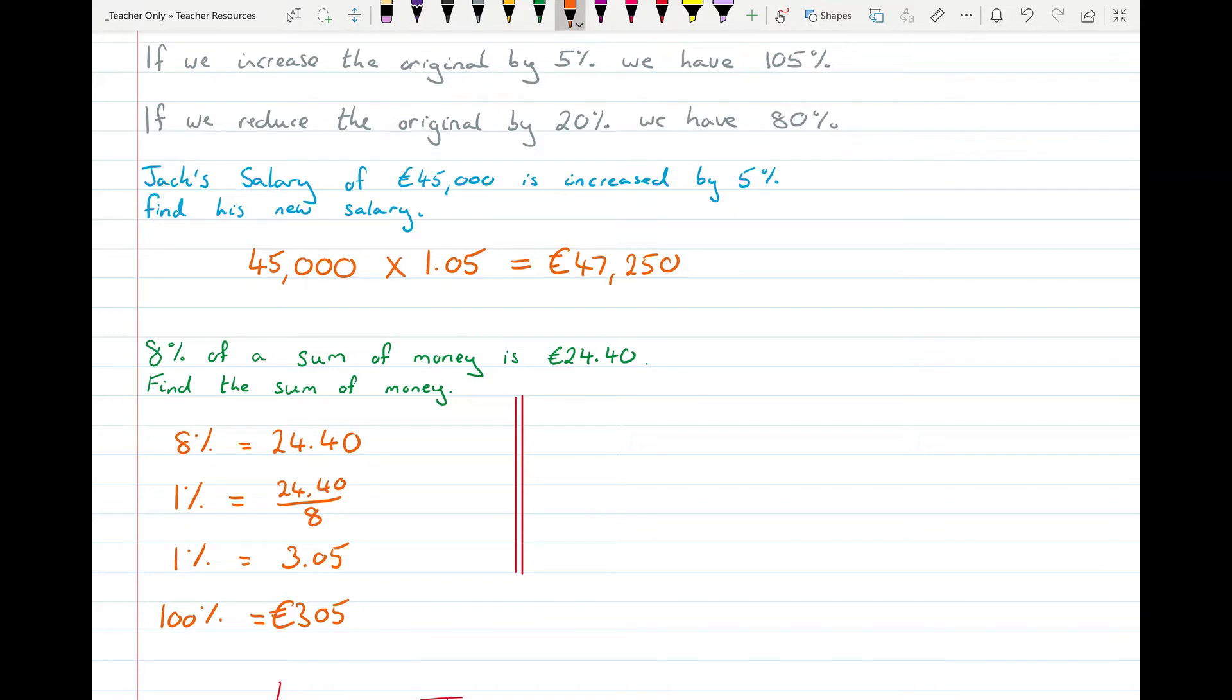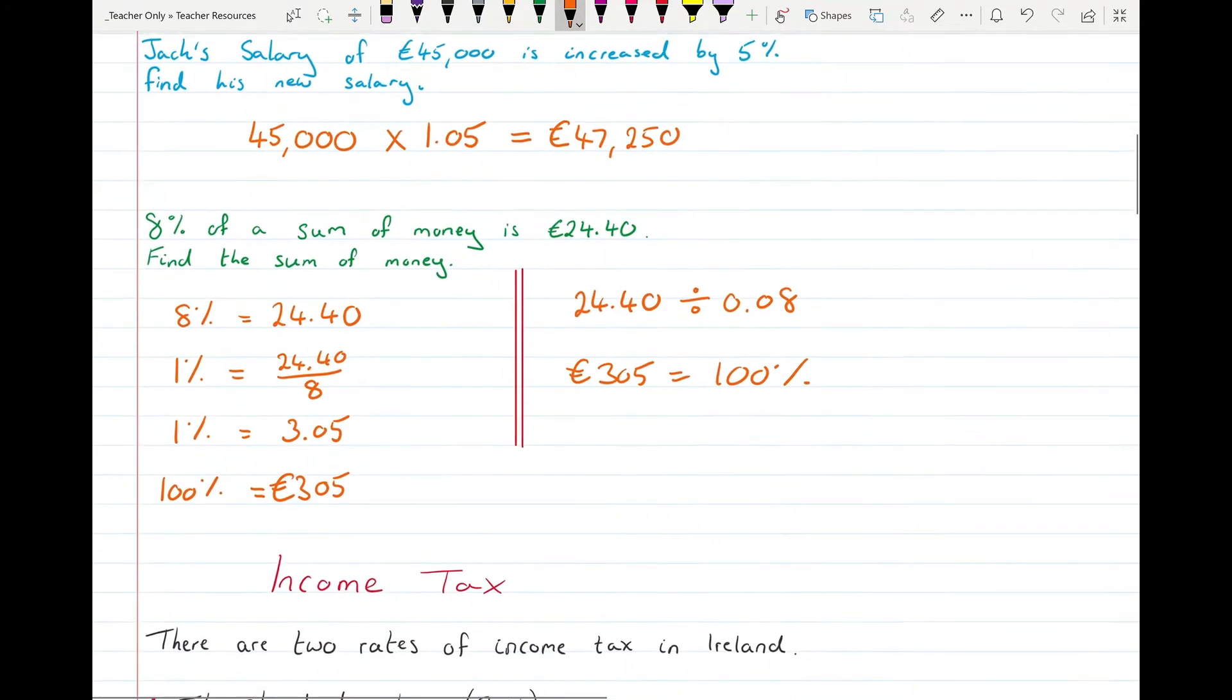An alternative method of doing that is if you had the €2,440 and we know that that's 8%, to go back to 100% instead of multiplying by 0.08, if we were to divide by 0.08 that would bring us back up to 100%. So that would mean that €305 is 100%. So either way you might have done it one way previously or you might have done it a different way. Either is acceptable once you're getting there.